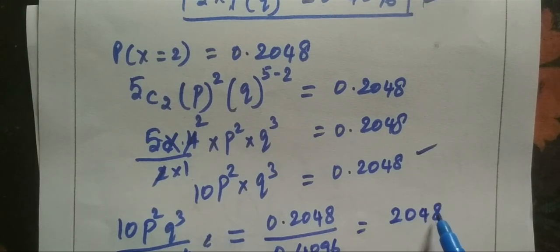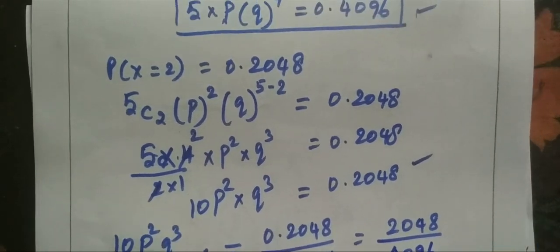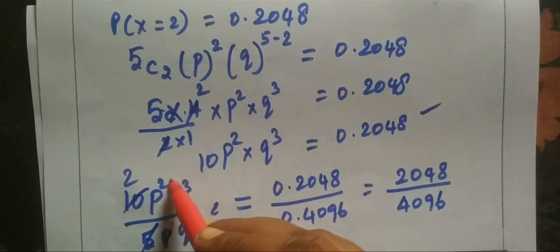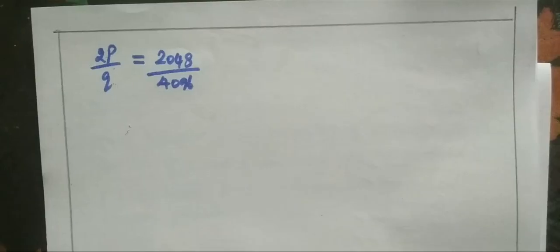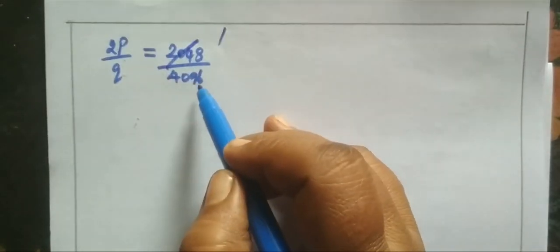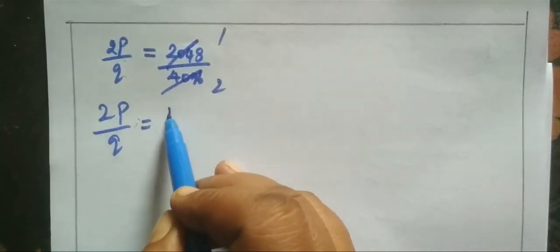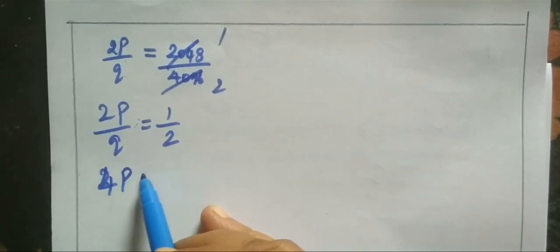That equals 0.2048 divided by 0.4096. If you have 4 digits in the numerator, you need 4 digits in the denominator. What cancels here? 5 is once here, twice there. If you have 1p, you can cancel and 1p will be balanced. q cubed by q to the power 4, so 2p by q equals half.